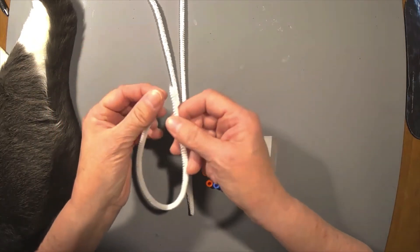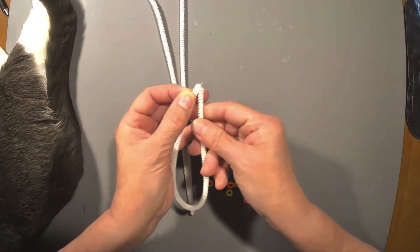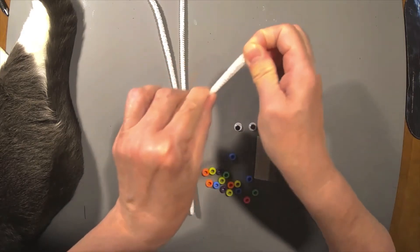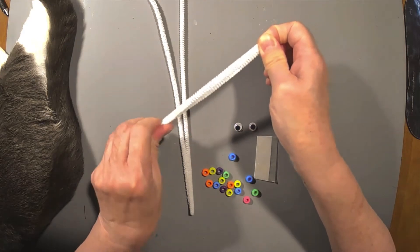Now the first thing you're going to do is take one of the pipe cleaners and fold it in the middle. Try to get the ends together and that way you'll be able to fold it right there in the middle. If it's a little bit off, don't worry about it. It's not a big deal.